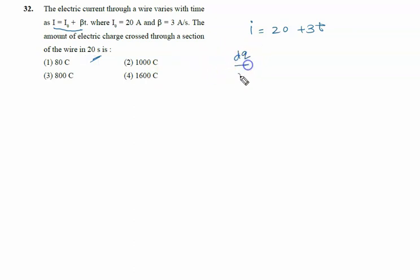So I equal to dq by dt. So dq by dt is 20 plus 3t, and dq can be written as 20 plus 3t into dt. Now we open the bracket. dq equal to 20 dt plus 3t into dt.